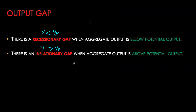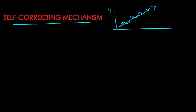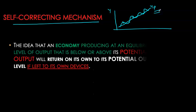The output gaps are actually always calculated as a percentage. We look at the deviation of the actual GDP from its potential as a percentage of the potential. For example, we could have production of $85 billion of real GDP versus our potential of $80 billion — as a percentage of the $80 billion, this gives a positive output gap of about 6.25%. This idea that our output will always move towards its long-run potential level of GDP is called the self-correcting mechanism of our macro economy.